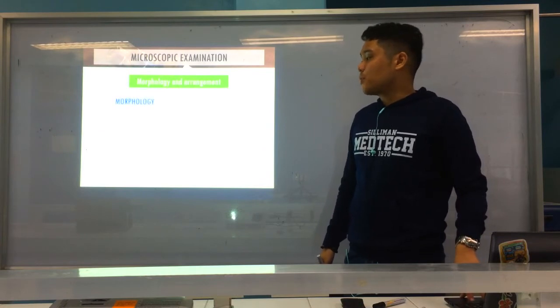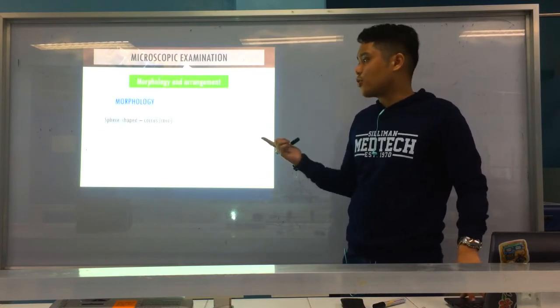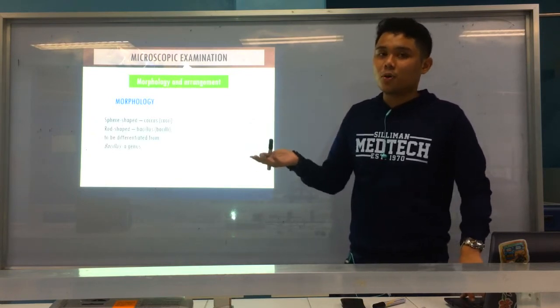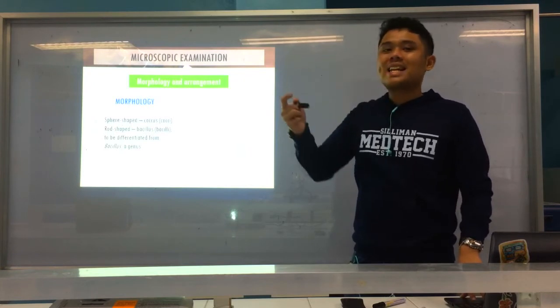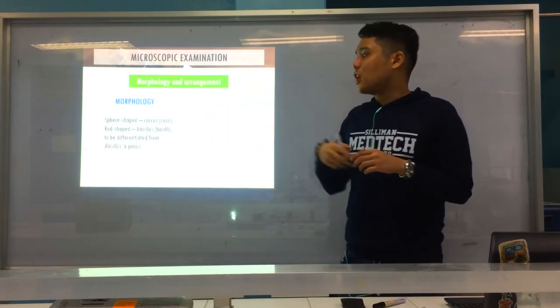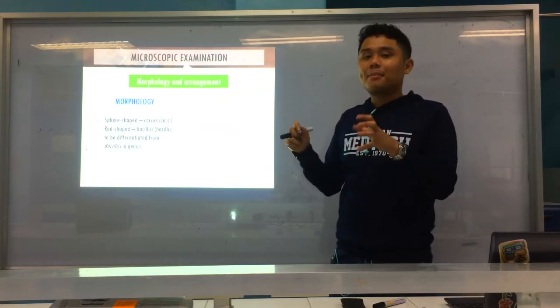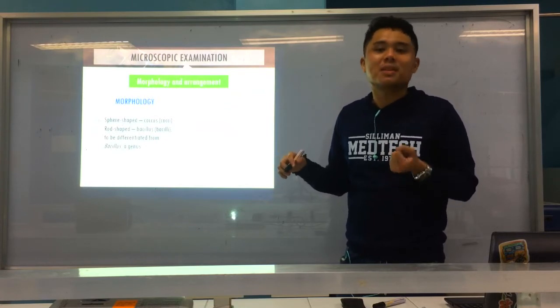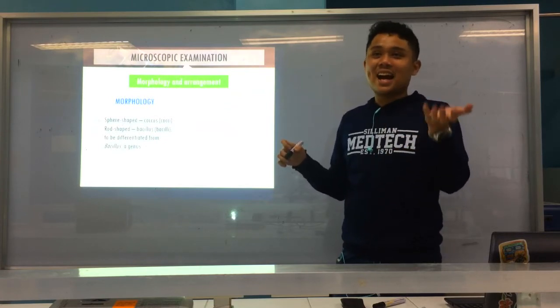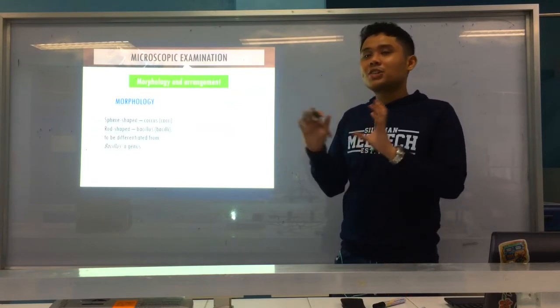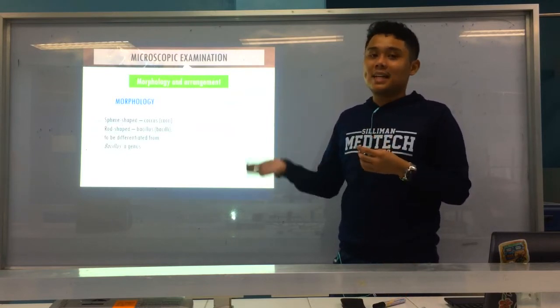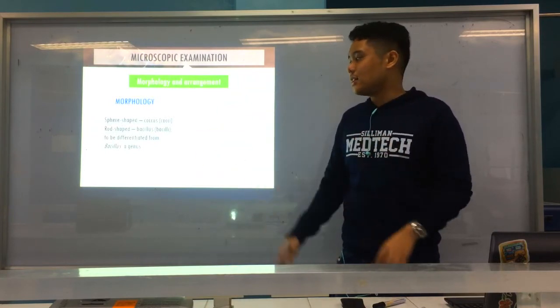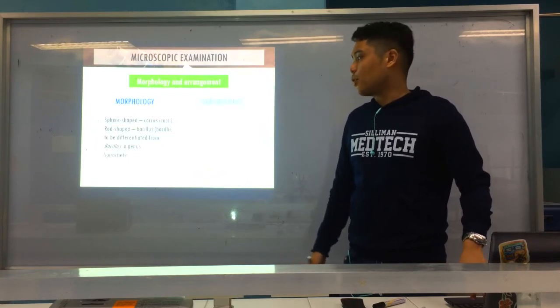Now we go to morphology and arrangement. For morphology, it could be sphere-shaped, cocci or coccus. Rod-shaped, bacillus. Do not be confused with the genus Bacillus. When we say morphology, bacilli, they're elongated, rod-shaped. But there's also a genus Bacillus. So what's the morphology of Bacillus? It's bacilli. It's a bacillus. But to describe a rod-shaped organism, it's a bacillus. But there's also a genus Bacillus. So do not be confused. And spirochete, a spiral organism.